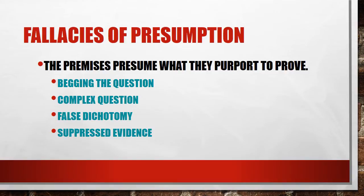Now, we're going to study first fallacies of presumption. That happens when you presume something that you were supposed to be proving in your conclusion. They include such things as begging the question, complex question, false dichotomy, and suppressed evidence.